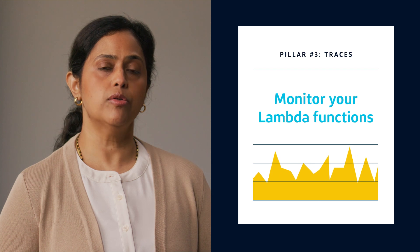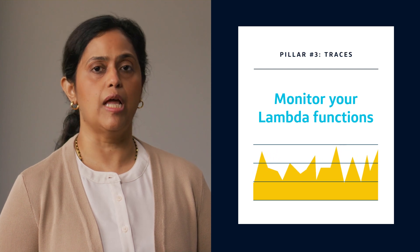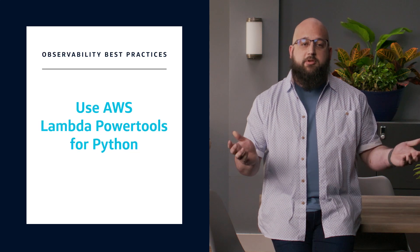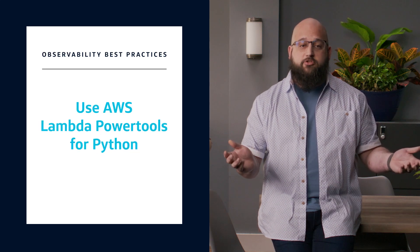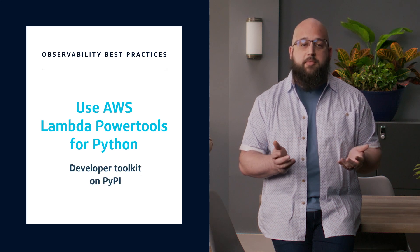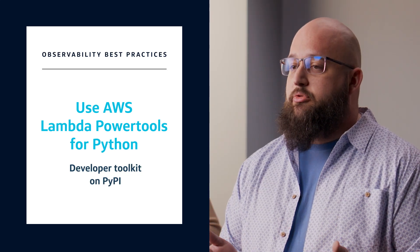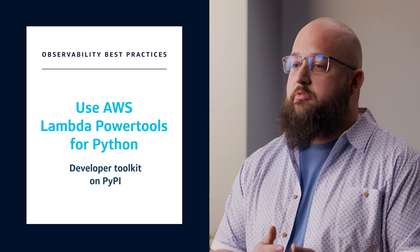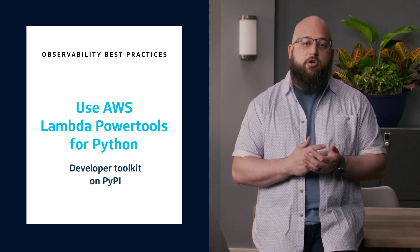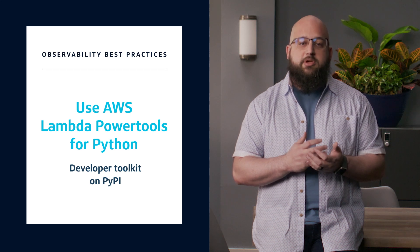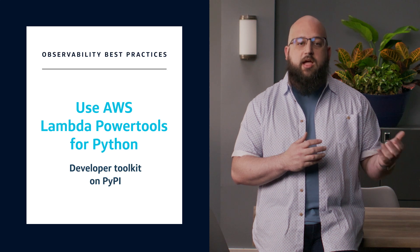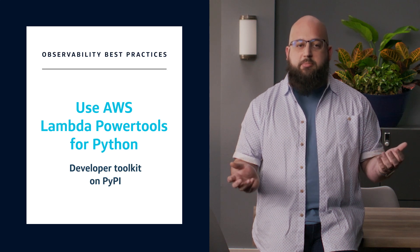This may include automated rollback to a previous version of the Lambda function. For those of you in the AWS community, use AWS Lambda Power Tools for Python if you aren't already. This is a fantastic open source project published on PyPI. Power Tools allows for simpler observability practice without you needing to build and maintain your own. Even if you aren't using AWS as your provider, you can access these tools — Power Tools brings together open source libraries and implements AWS best practices.